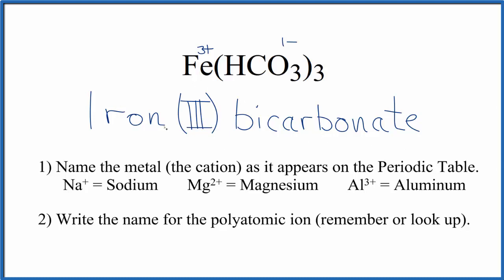If you were given the name here, iron three bicarbonate, and asked to write the formula, you'd know because of the Roman numeral three that iron would be three plus, and then you would have memorized that the bicarbonate ion, the HCO3, the whole thing has a charge of one minus, so you need three of them.